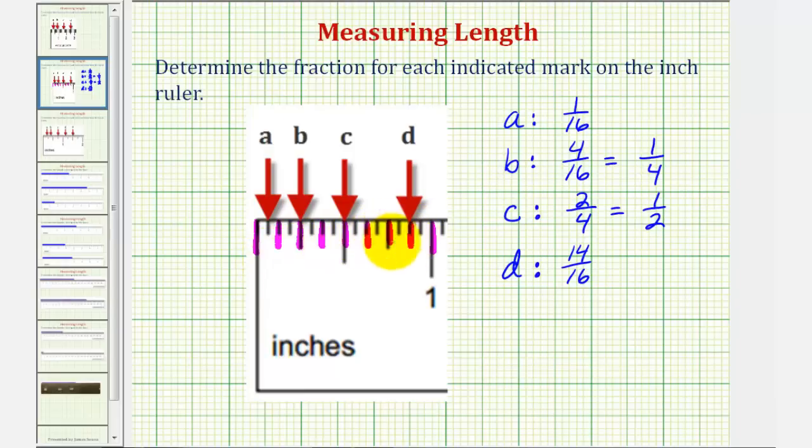Notice how we have one, two, three, four, five, six, seven, eight equal pieces, or eight equal partitions. And therefore, D would be one, two, three, four, five, six, seven-eighths in simplest form.